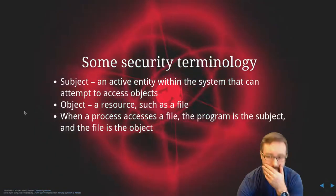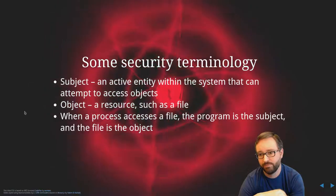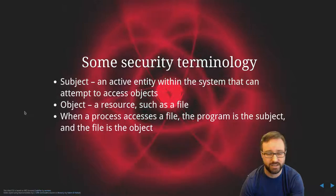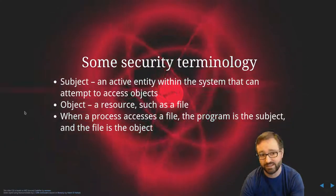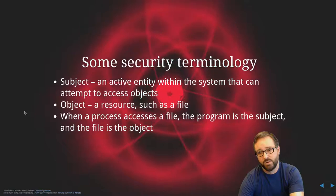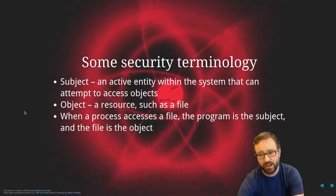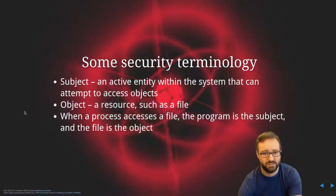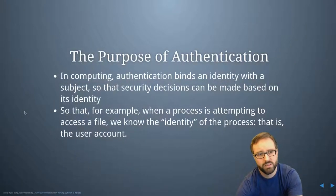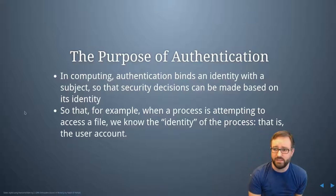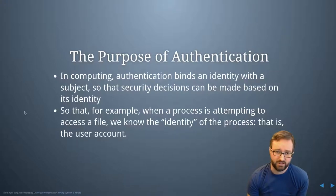There's some important security terminology: we've got subjects, which are the active entities within a system trying to do something — to access an object. Objects are resources such as a file. When a process accesses a file, the program is the subject and the file is the object. The formal purpose of authentication is to bind an identity with a subject so that we can make security decisions based on its identity.